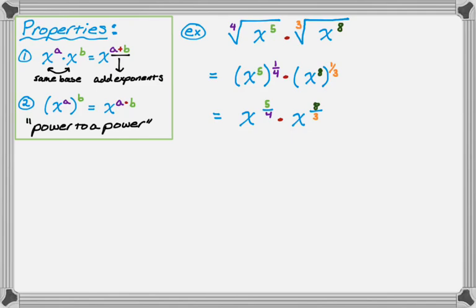And now I have the same base, and I'm multiplying, so I'm going to add the exponents. So x to the 5 fourths plus 8 thirds. And now I'm going to add the exponents. So I'm going to actually do the work. So I get 5 times 3 plus 8 times 4 all over 4 times 3. And I can simplify this. This simplifies to x to the 47 over 12.